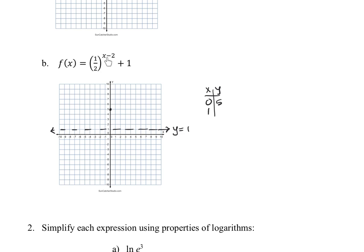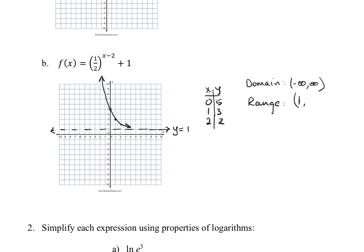When x equals 1: 1 subtract 2 is negative 1, one-half to the negative 1 is 2, and 2 plus 1 is 3, giving (1, 3). When x equals 2: 2 subtract 2 is 0, one-half to the 0 power is 1, and 1 plus 1 is 2, giving (2, 2). This graph represents exponential decay because the base is between 0 and 1. The domain is still negative infinity to positive infinity, and with the horizontal asymptote at positive 1, the range is from 1 to infinity.